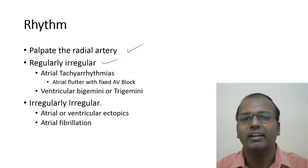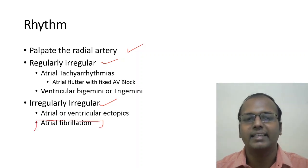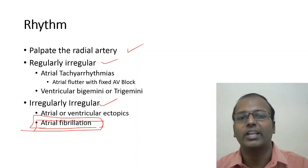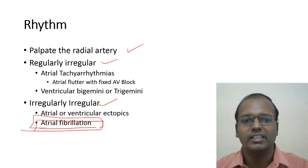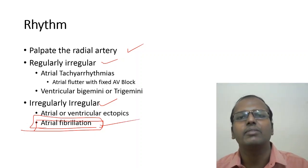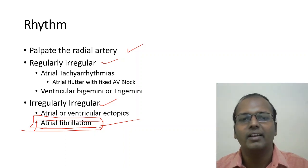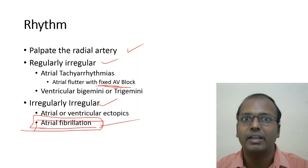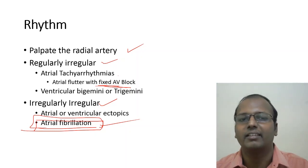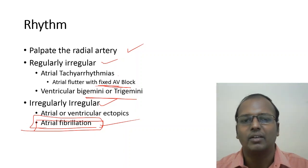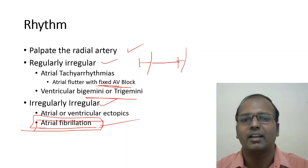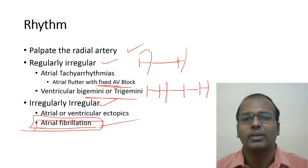Palpate the radial artery for rhythm. Irregularly irregular rhythm — the classic example is atrial fibrillation, the first differential diagnosis in any patient with this finding. Atrial or ventricular ectopics can also cause irregularly irregular rhythm. Regularly irregular rhythm can occur in atrial flutter with fixed AV block; variable AV block causes irregularly irregular rhythm. Ventricular bigeminy means one normal beat followed by one premature beat; trigeminy means two normal beats followed by one premature beat.